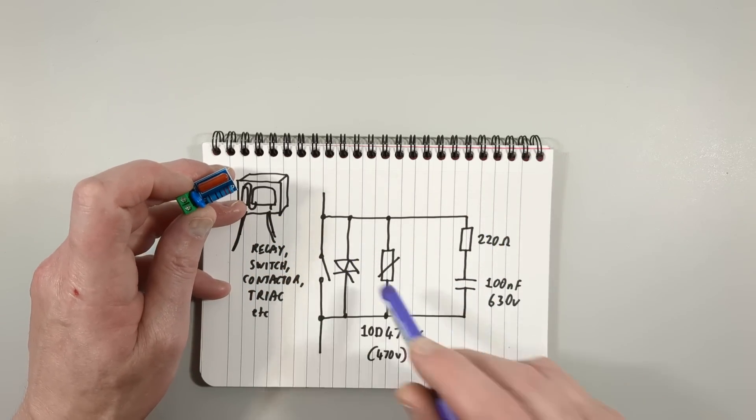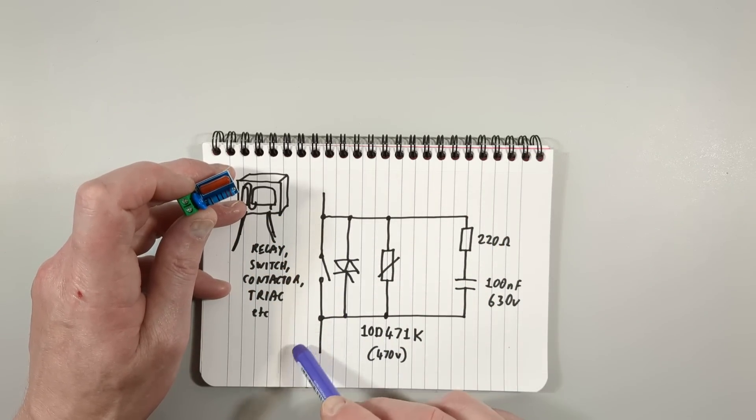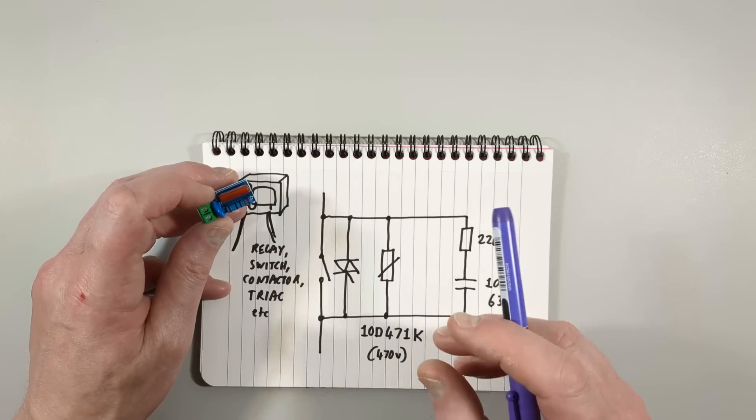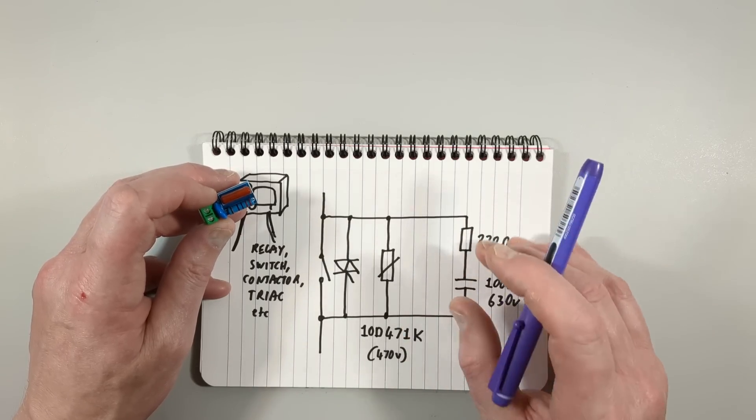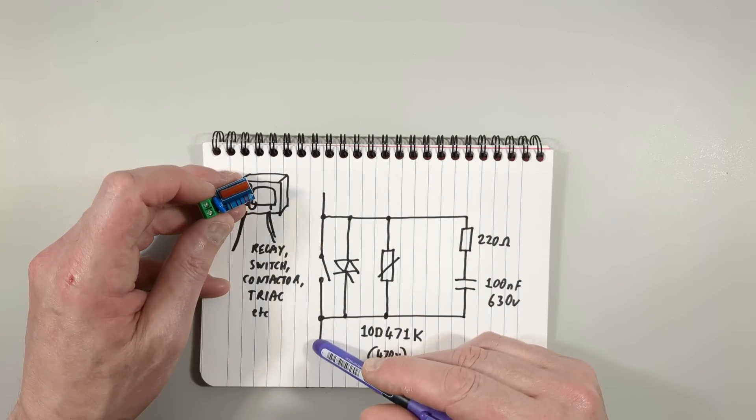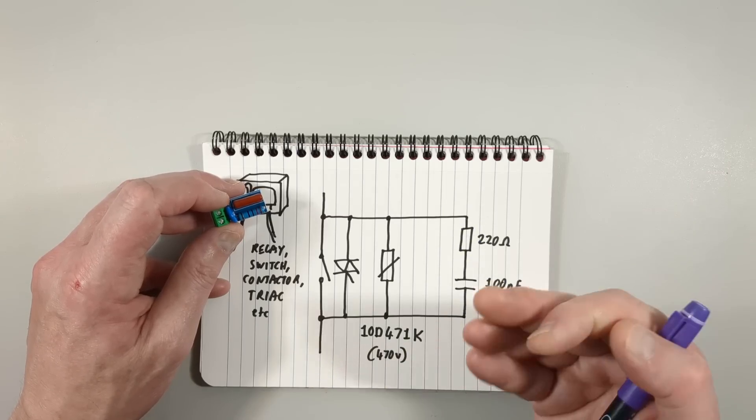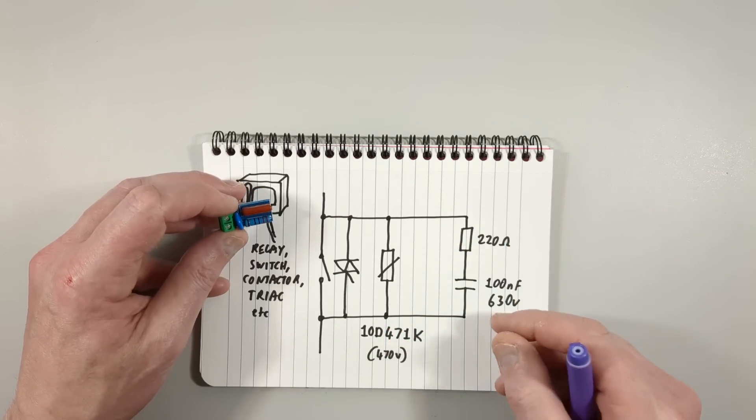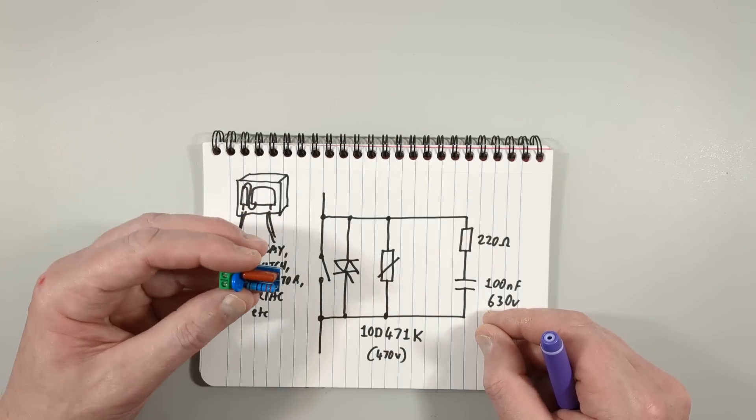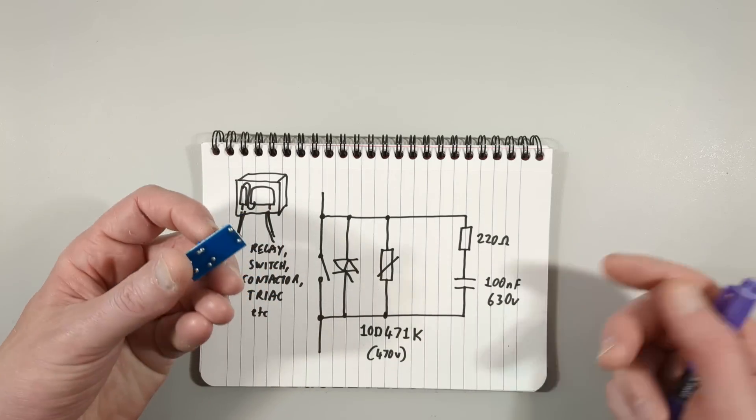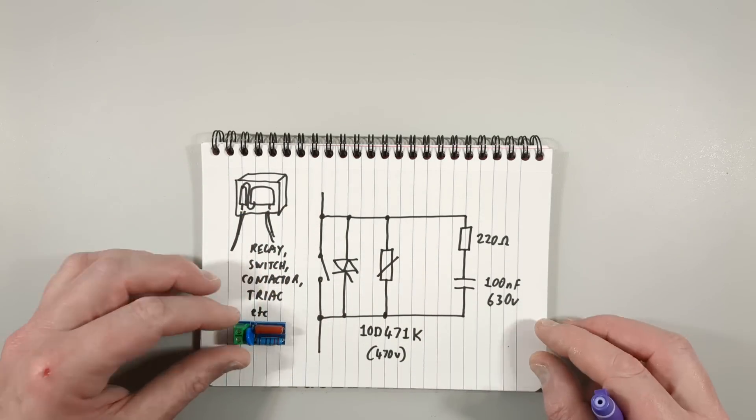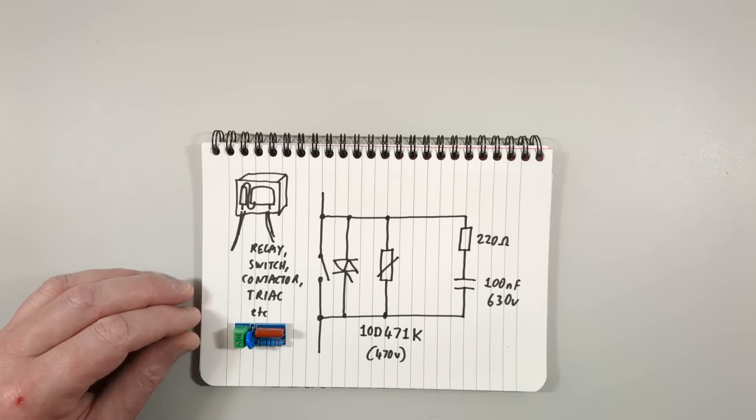You also have to keep in mind when you put a snubber network across a contact that the load it's driving - say for instance a super low current load like a solenoid coil - it may pass enough current to stop that solenoid coil from dropping out. But very useful things, they're absolutely an essential part of industrial control electrical and electronic equipment.